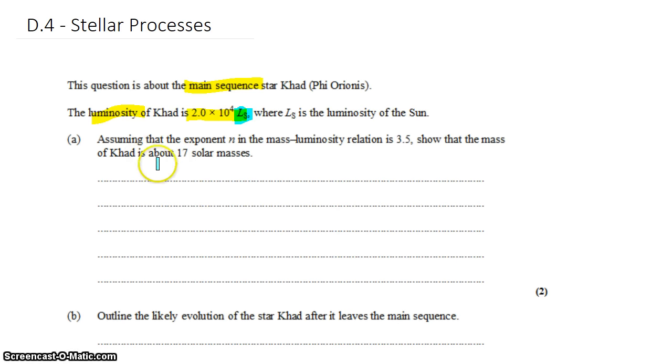We want to find the mass of CAD, and we're told that it's 17 times the mass of the sun, so we're going to have to relate the luminosity of CAD to the mass of CAD, all in terms of the sun's luminosity and mass.